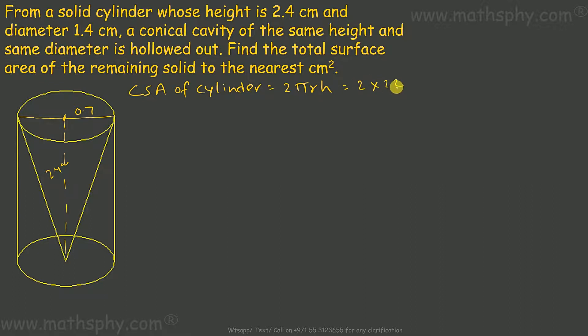It comes to 2 into 22 over 7, radius will be 0.7, height is 2.4. This gives me 10.56 cm². 22 over 7 into 0.7 into 0.7, that gives me 1.54 cm².